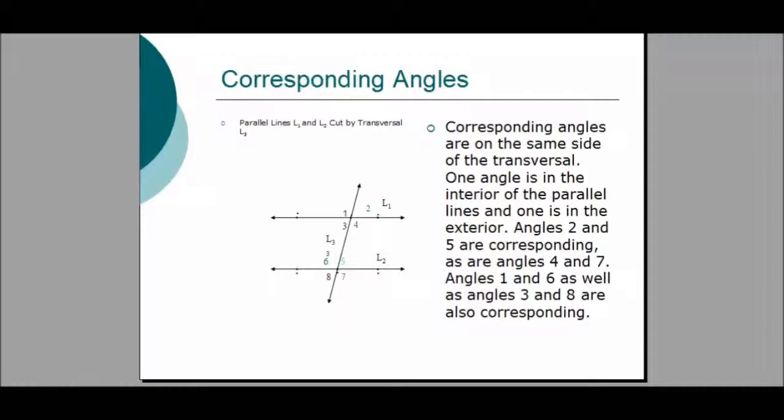Corresponding Angles: if two parallel lines are cut by a transversal, corresponding angles are congruent. Corresponding angles are on the same side of the transversal. If one angle is in the interior of the parallel lines, the other angle will be in the exterior. Angles 2 and 5 are corresponding angles — Angle 5 is inside the two parallel lines, Angle 2 is outside, and they are both on the right side of the transversal. Angle 2 is congruent to Angle 5.